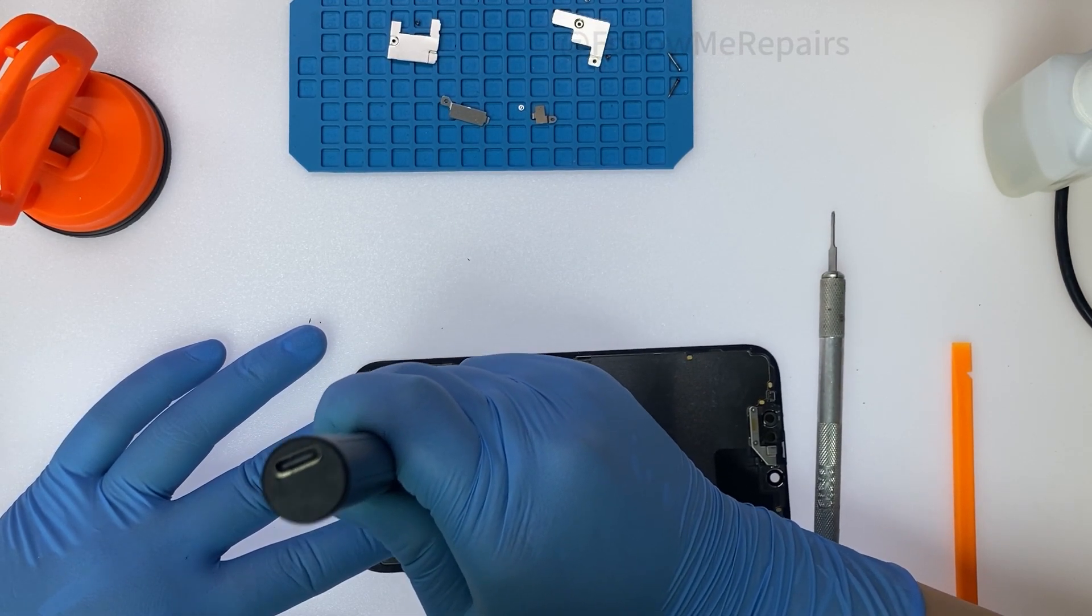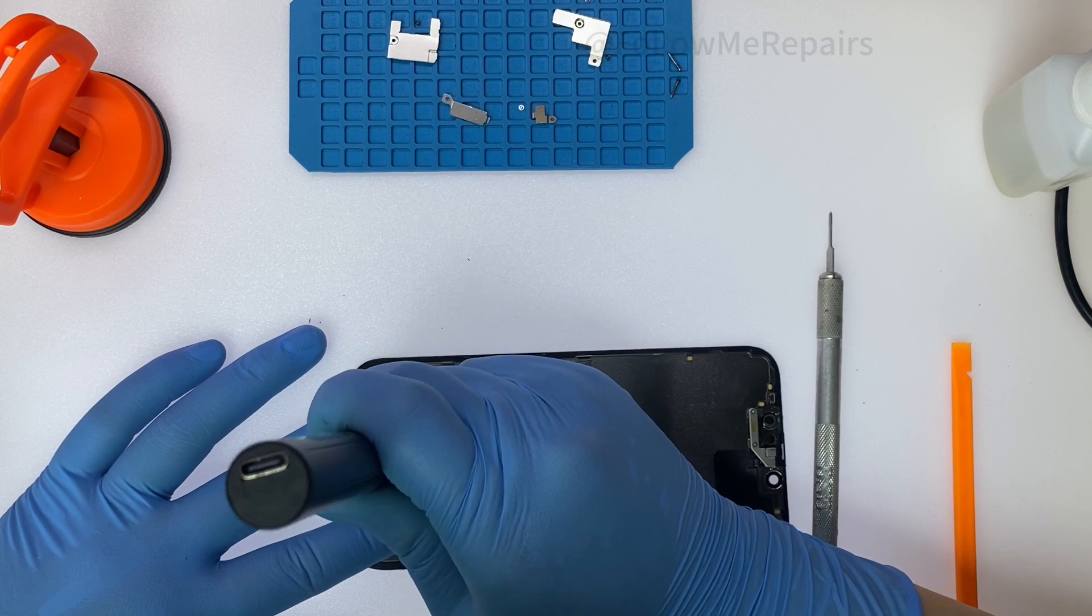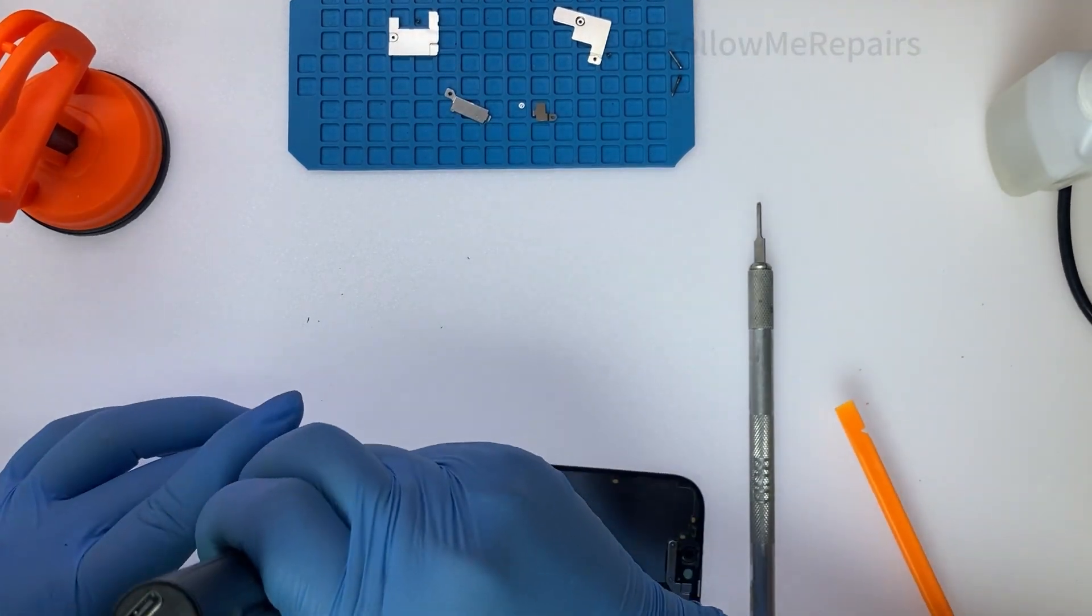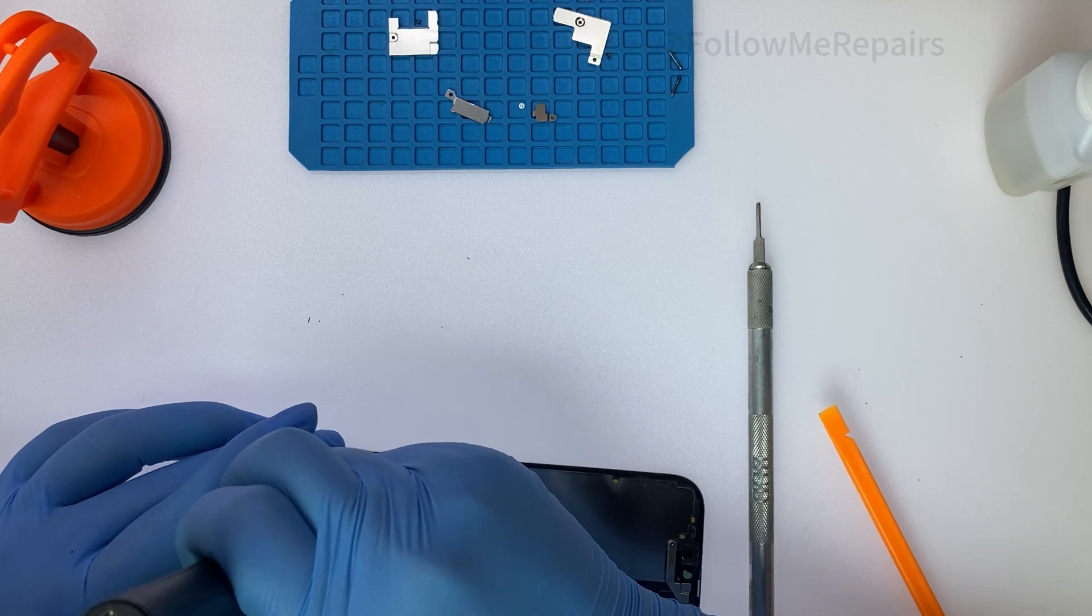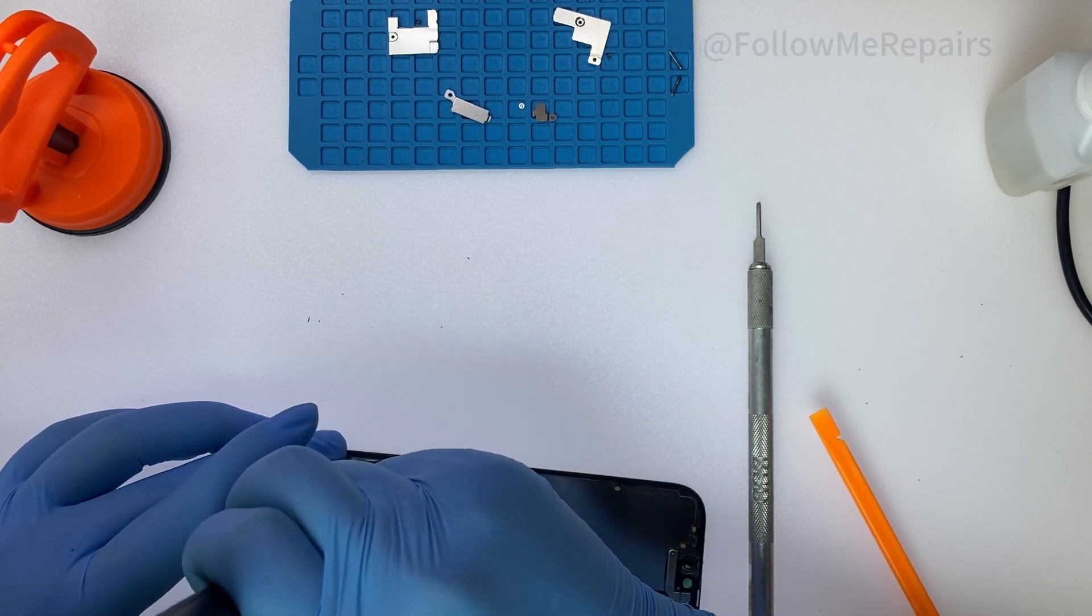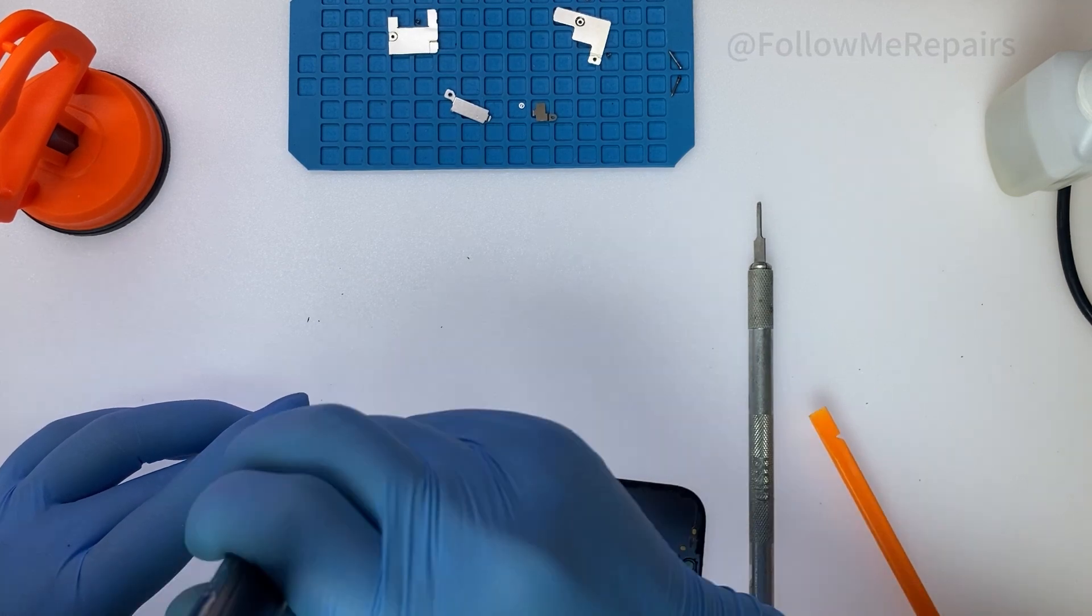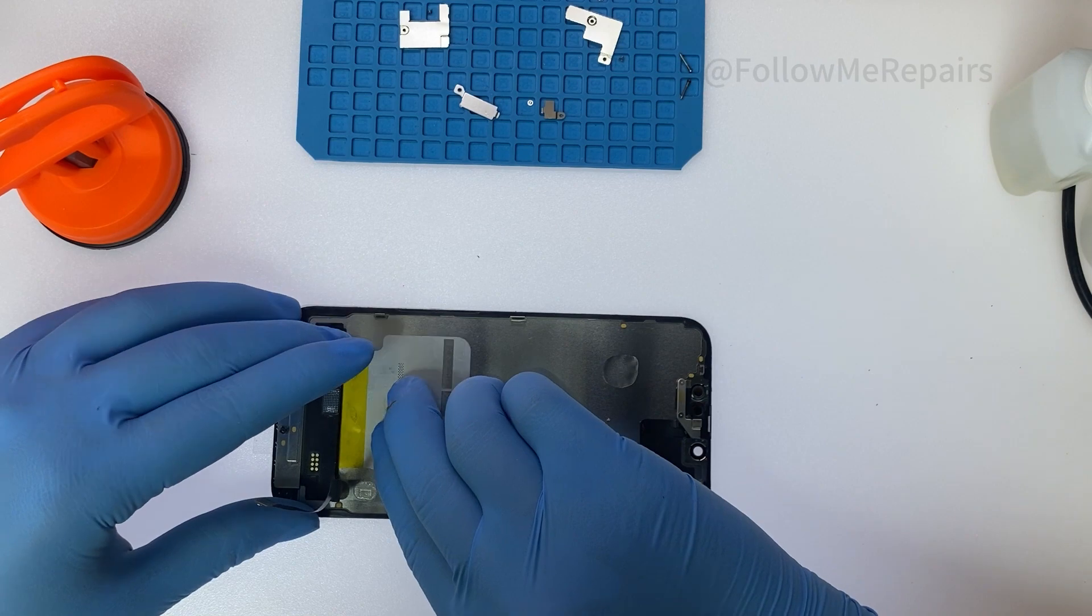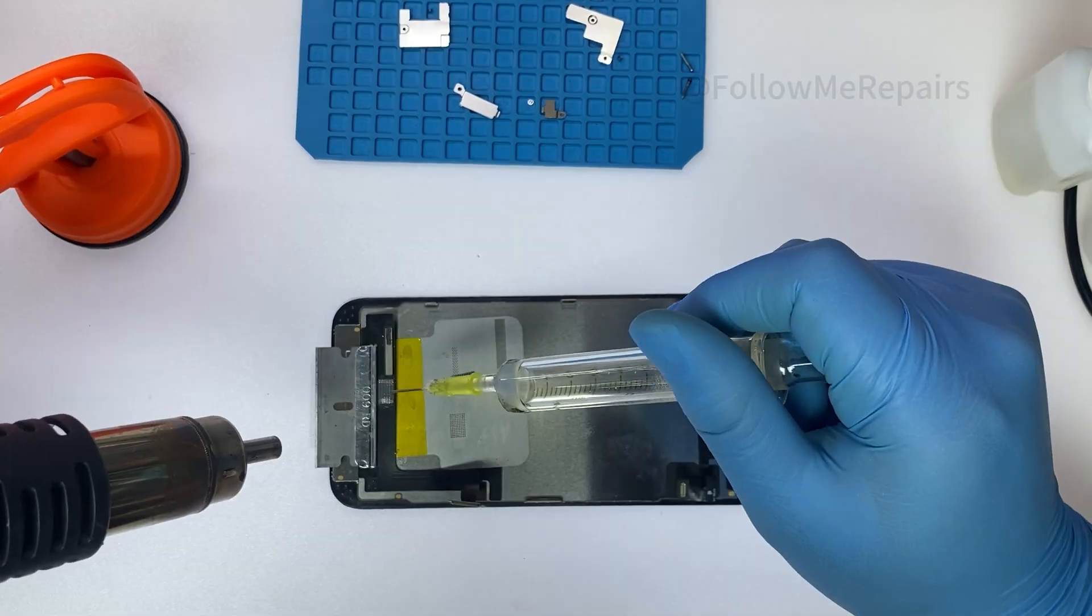Sand the BGA chip pin positions on the new screen. Solder the completed BGA chip onto the new screen.